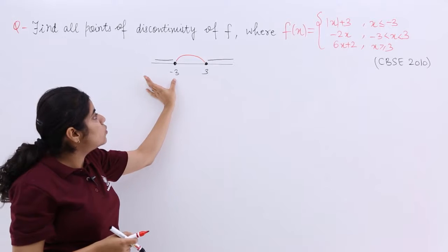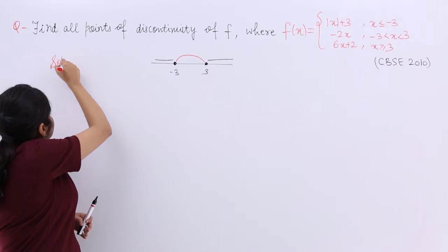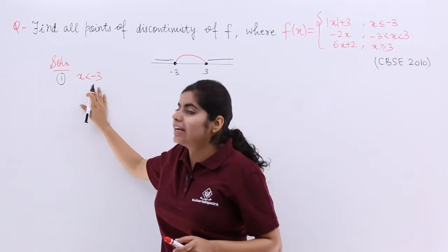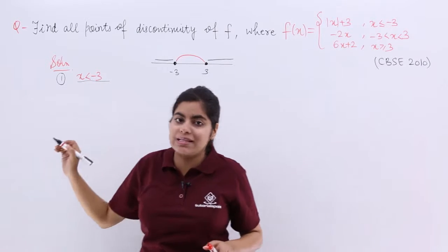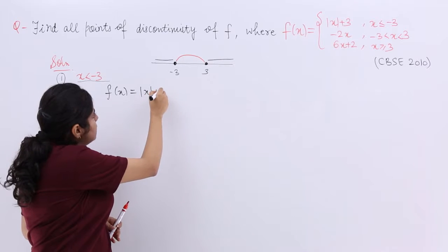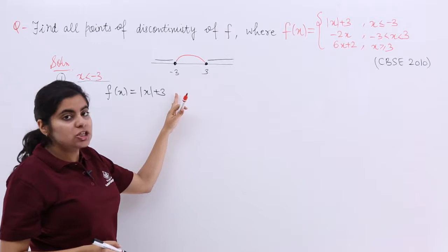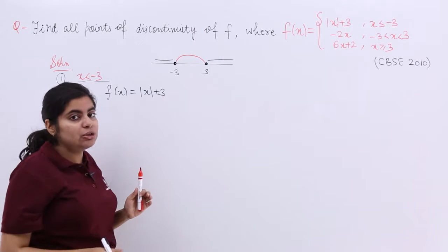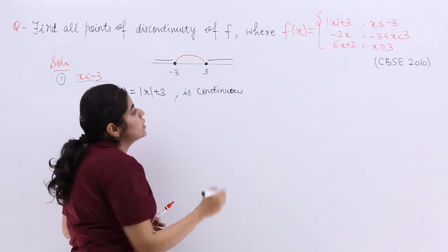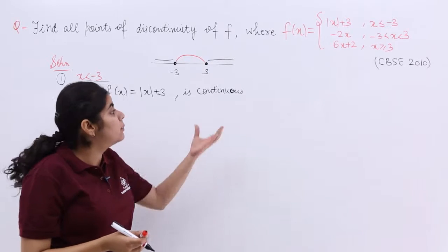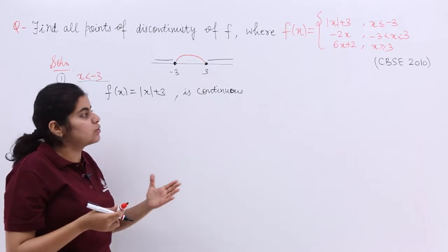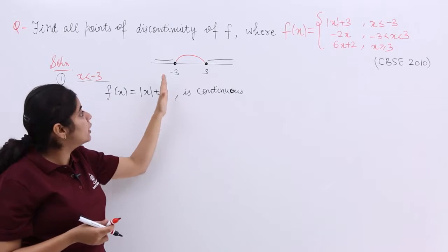For x less than -3, the function is f(x) = |x+3|. The modulus function is always continuous, and 3 is a constant which is also always continuous. The sum of two continuous functions is again continuous. So there is no point of discontinuity in the region x < -3.